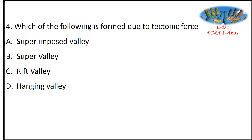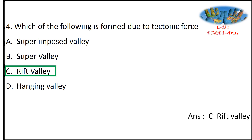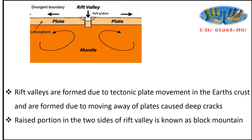Which of the following is formed due to tectonic force? Options: superimposed valley, super valley, rift valley, hanging valley. Superimposed valley and super valley are formed due to running water; hanging valley is due to glaciers. The answer is rift valley. Rift valleys are formed due to tectonic plate movement in the Earth's crust — plates moving away from each other cause deep cracks known as rift valleys, otherwise called graben. The raised portion on either side is known as a block mountain.